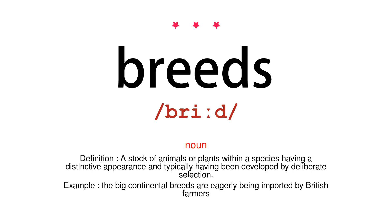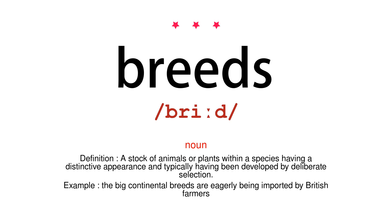Noun. Definition – a stock of animals or plants within a species having a distinctive appearance and typically having been developed by deliberate selection. Example – the big continental breeds are eagerly being imported by British farmers.